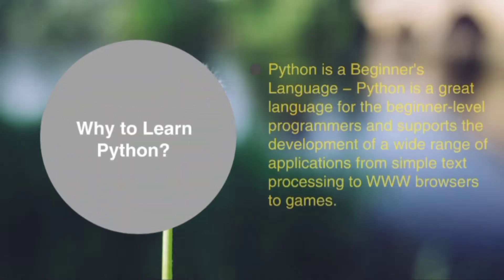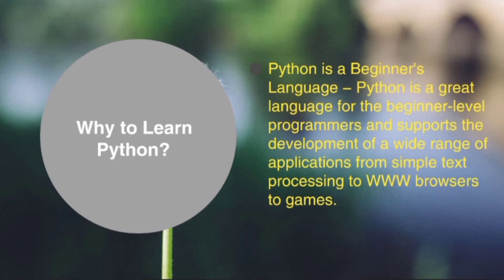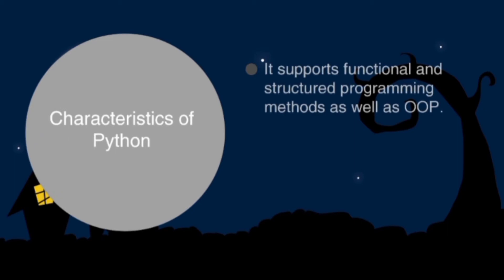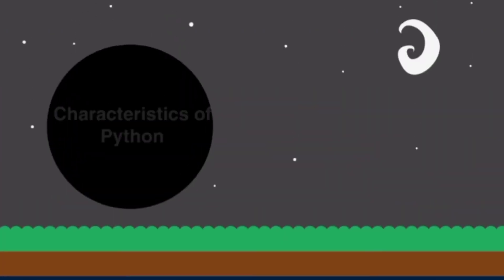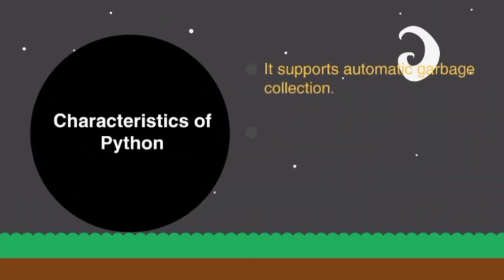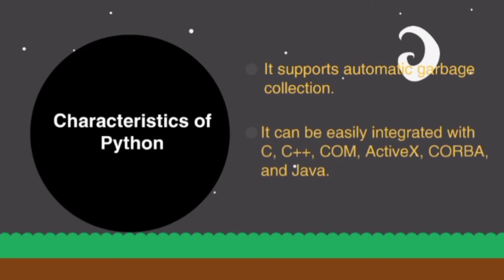Python is a beginner's language — it is a great language for beginner level programmers and supports the development of a wide range of applications, from simple text processing to web browsers to games. Characteristics of Python: it supports functional and structured programming methods as well as OOP. It can be used as a scripting language or compiled to bytecode for building large applications. It provides very high level dynamic data types and supports dynamic type checking. It supports automatic garbage collection. It can be easily integrated with C, C++, COM, ActiveX, CORBA, and Java.